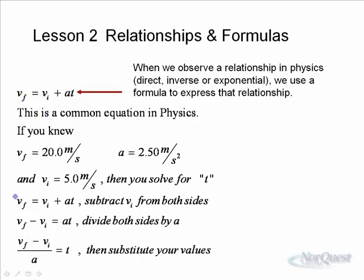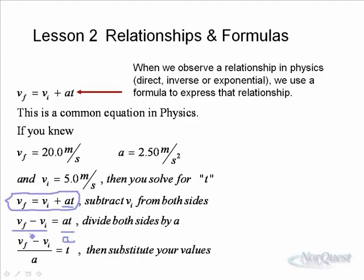You know Vf is 20, A is 2.5, and the initial velocity was 5. How do you solve for t? On most formula sheets that accompany an exam you might have this particular formula. To solve for t algebraically, you use the golden rule of math: whatever you do to one side of an equation, you do to the other. To isolate t, we subtract Vi from both sides, leaving Vf − Vi on the left. Then we divide both sides by A, and we end up with t = (Vf − Vi) / A.